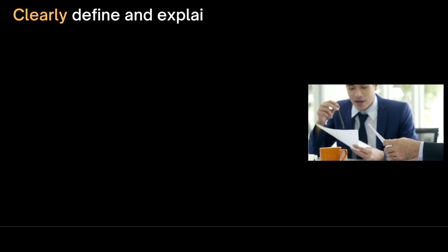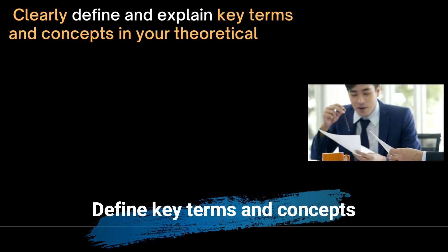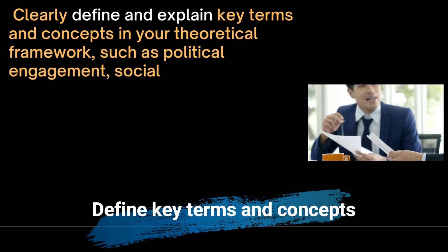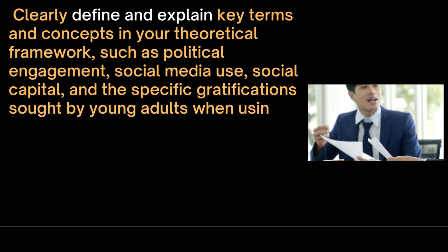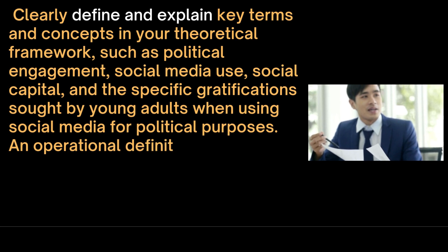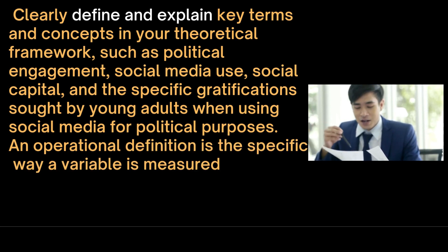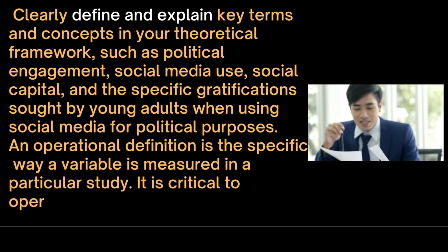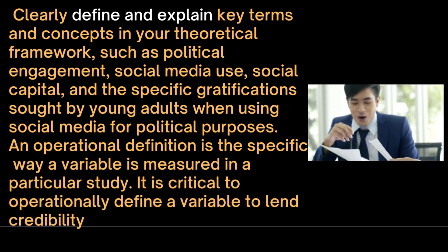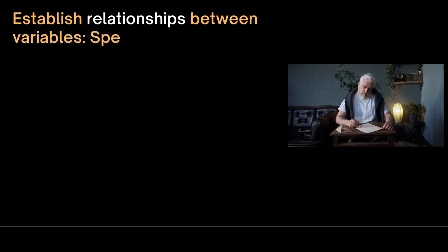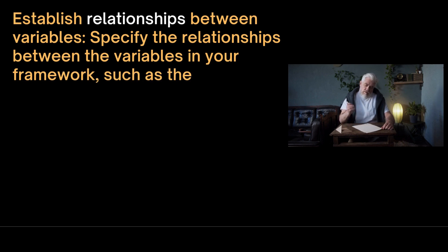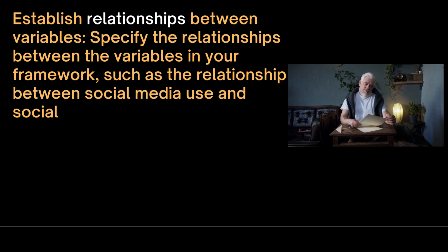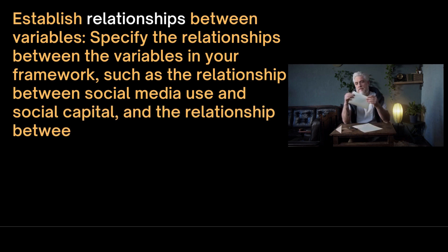We need to clearly define and explain key terms and concepts in the theoretical framework, such as political engagement, social media use, social capital and the specific gratifications sought by young adults when using social media for political purposes. An operational definition is the specific way a variable is measured in a particular study — it is critical to operationally define a variable to lend credibility to the methodology. We then establish relationships between variables, such as the relationship between social media use and social capital, and the relationship between social capital and political engagement.